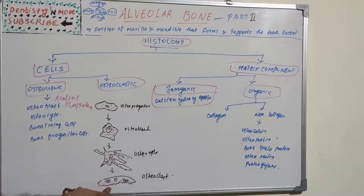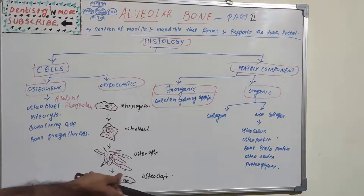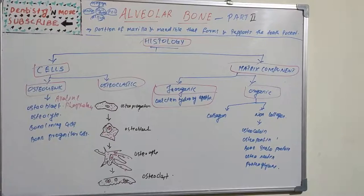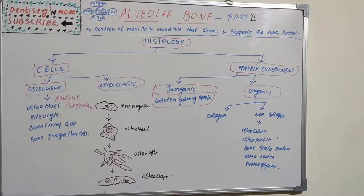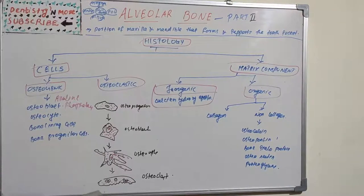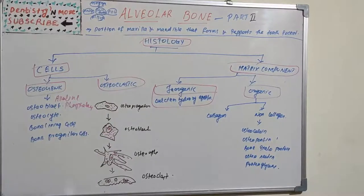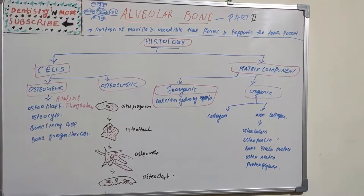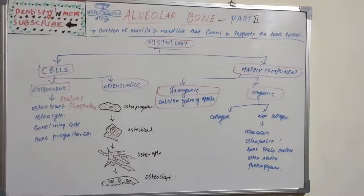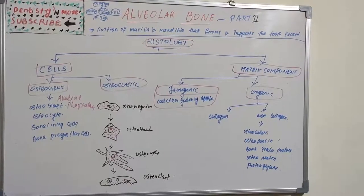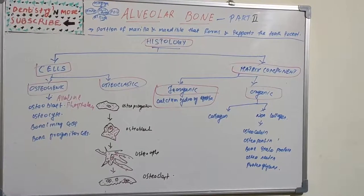The clear zone is the adjacent cytoplasm which does not have any cell organelles. This clear zone creates an isolated micro-environment in which resorption can take place, so the clear zone is also important. Several osteoclasts excavating a large area of bone at the leading edge of resorption is termed the cutting cone.